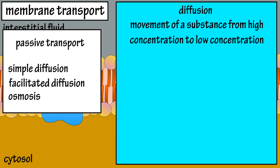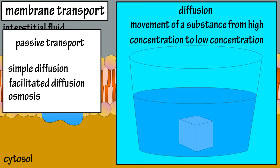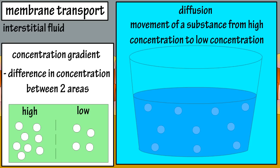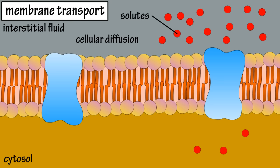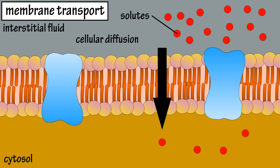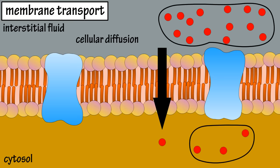Diffusion is the movement of a substance from where it has a high concentration to where it has a low concentration, or the tendency of a substance to spread out evenly over a given space. For instance, when a sugar cube is dissolved in water, it will dissolve and eventually spread out evenly until it reaches equilibrium. Diffusion occurs down a concentration gradient, which is a difference in concentration of a substance between two areas. So sugar molecules will move from an area of high concentration to an area of low concentration. Cellular diffusion is when diffusion of a solute — a dissolved substance — occurs across the plasma membrane, dependent on the concentration in the interstitial fluid outside and the cytosol inside the cell.